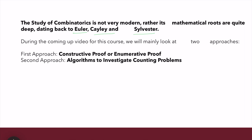During the coming videos for this course, we'll mainly look at two approaches. The first approach is a constructive proof or enumerative proof — very much about how a particular structure appears, how many ways we can write something. This means there is not just one particular way; there could always be a possibility of an alternate way of counting something.